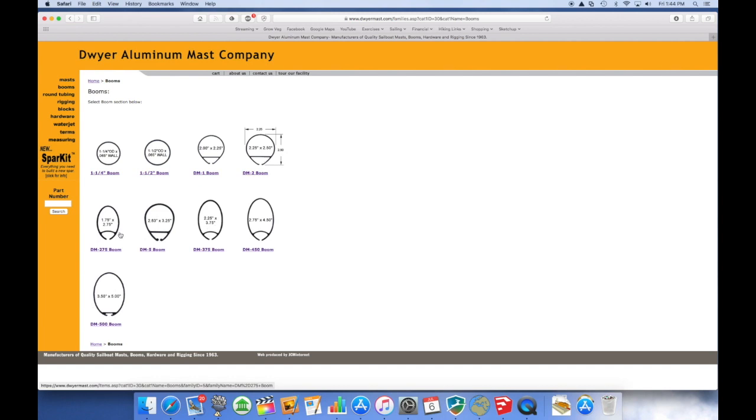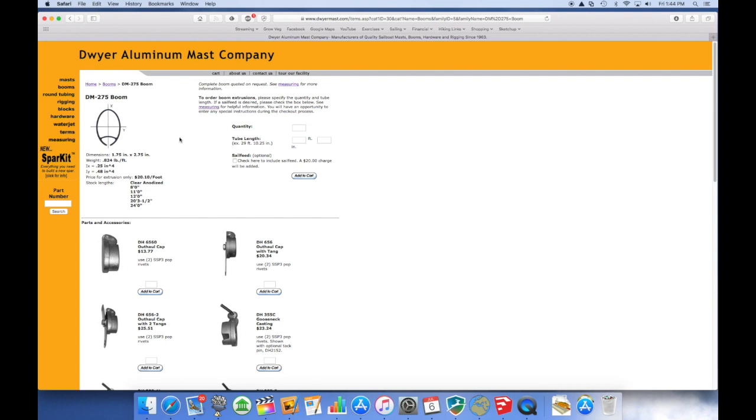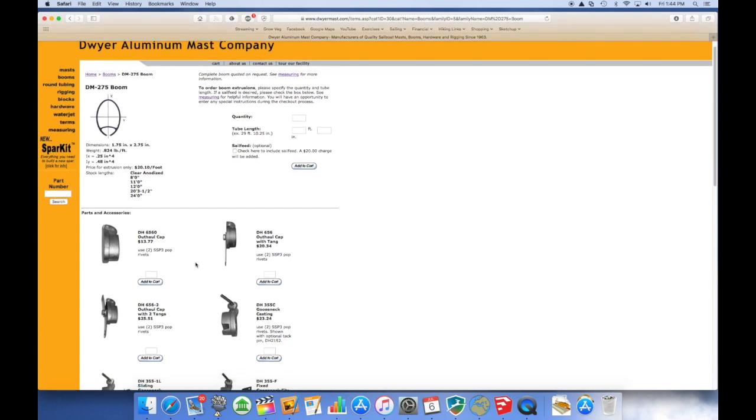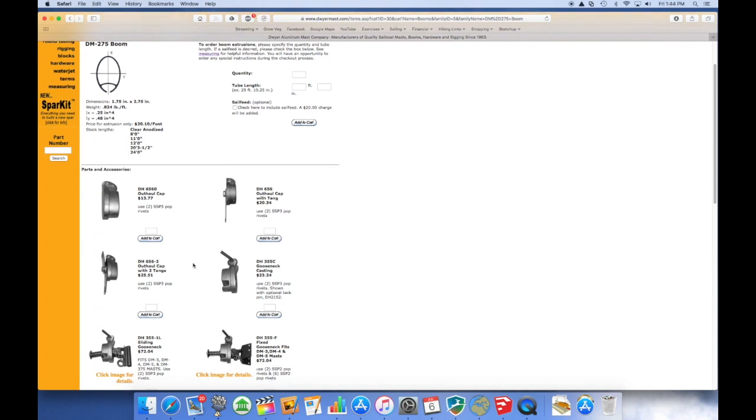And in here there's a selection of booms, and in checking and measuring the boom on my boat, I found that it corresponded to the DM 275 with the dimensions of one and three quarters by two and three quarters.